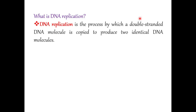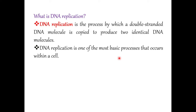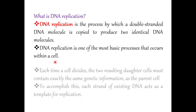So what do we mean by DNA replication? DNA replication is the process by which a double-stranded DNA molecule is copied to produce two identical DNA molecules. There is one parent strand; that parent strand is copied into two strands. The process copies DNA with very high fidelity or accuracy, and it is one of the most basic processes that occur within the cell.